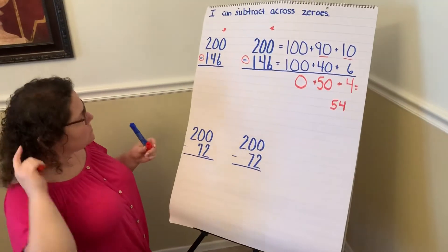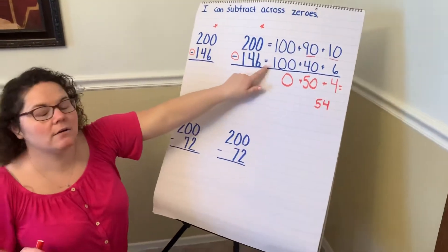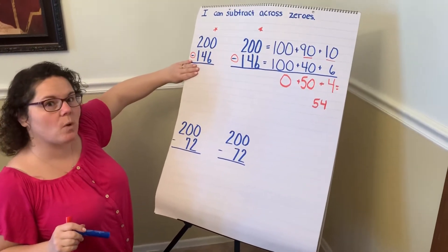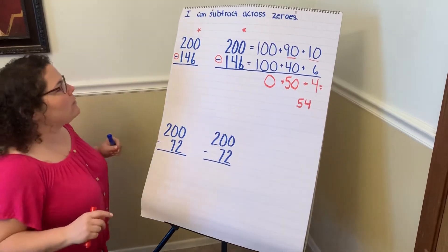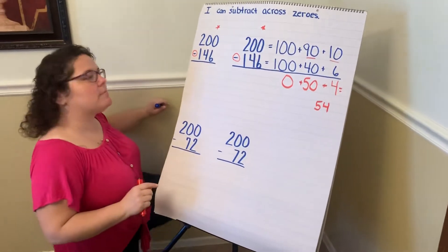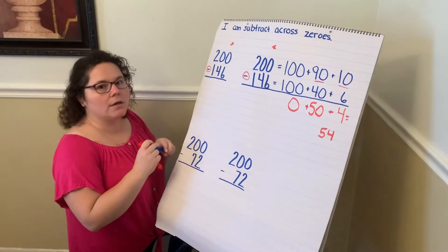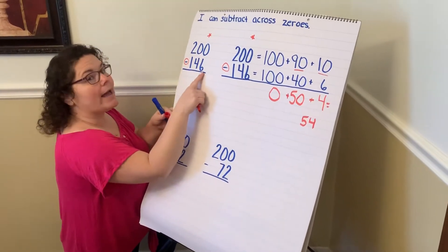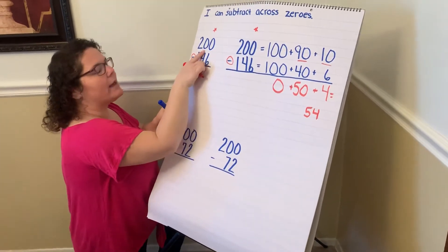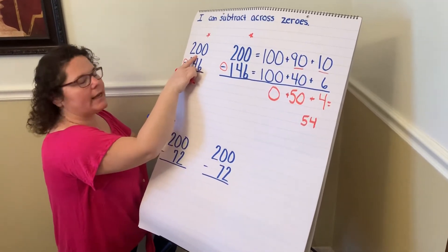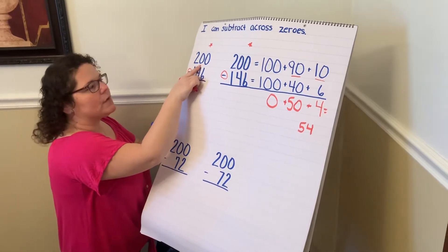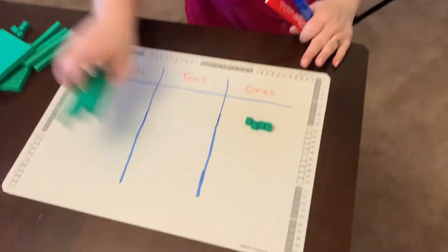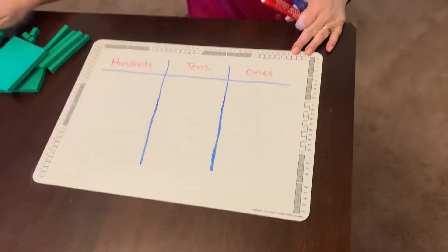If I want to do that ungroup first method, let me show you how this expanded form method really helps you to understand the why behind what we're doing. So when we're doing our ungroup first method — say that with me, ungroup first — we're going to say, I have more on the floor, so I have to go next door and get 10 more. There wasn't any. So if you remember, if we go back to what we had here with our 200,